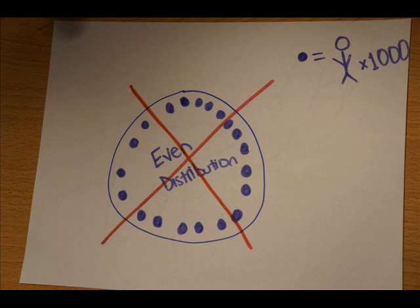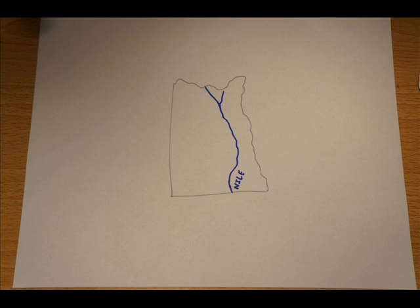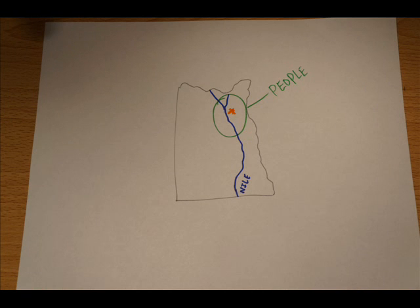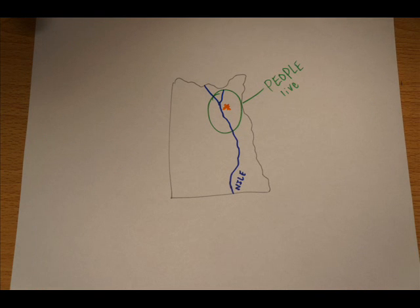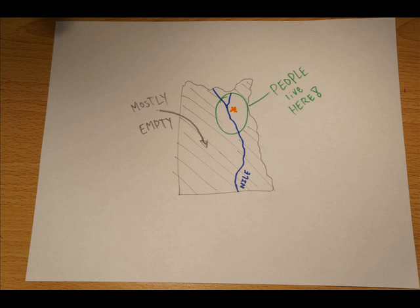No country has an evenly distributed population. Egypt, with a population of 73.3 million in 2004, has a seemingly moderate arithmetic population density of 190 per square mile. An estimated 98% of all Egyptians live in just 3% of the country's land, making the arithmetic population density useless.